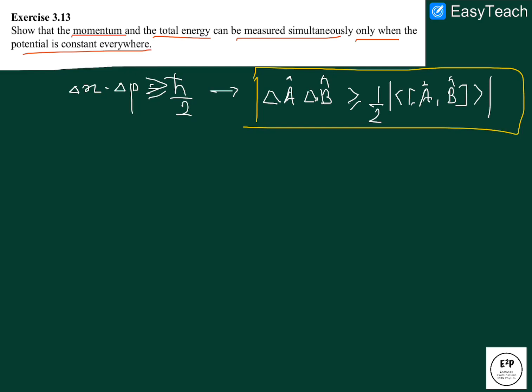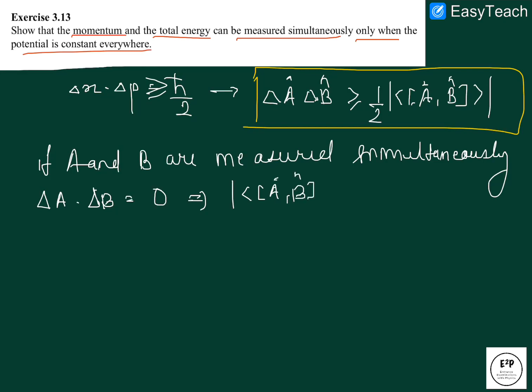Now if A and B are measured simultaneously, it means that the product of two is zero, which implies the modulus of expectation of commutator of the two operators is zero. That is nothing but the commutator of A and B are zero. So if two operators commute, then they can be measured simultaneously.